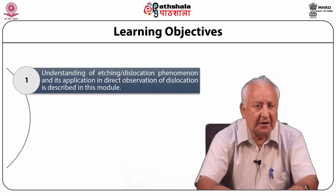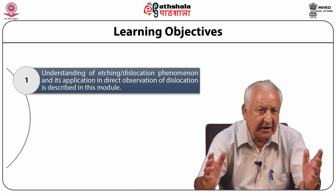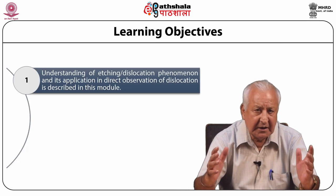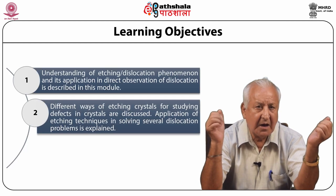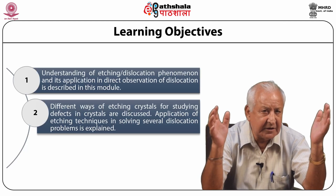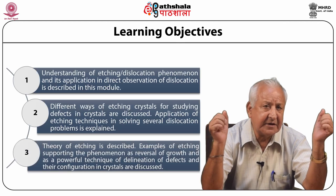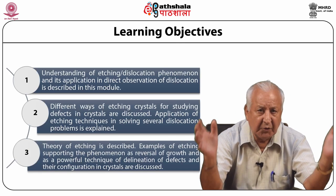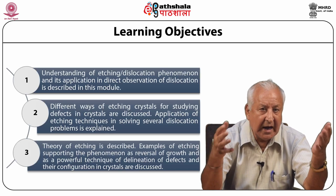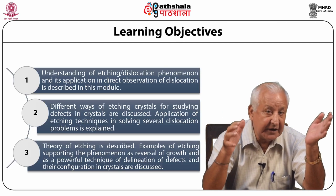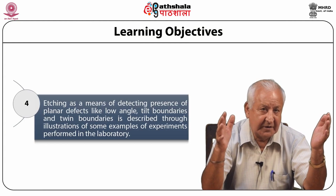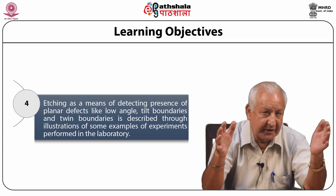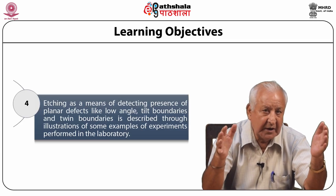Understanding of etching dislocation phenomenon and its application in direct observation of dislocation is described in this module. Different ways of etching crystals for studying defects in crystals are discussed. Application of etching techniques in solving several dislocation problems is explained. Theory of etching is described. Examples of etching supporting the phenomenon as a reversal of growth and as a powerful technique of delineation of defects and their configuration in crystals are discussed. Etching as a means of detecting presence of planar defects like low angle tilt boundaries and twin boundaries is described through illustrations of some examples of experiments performed in the laboratory.